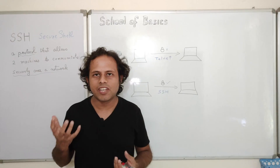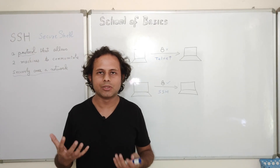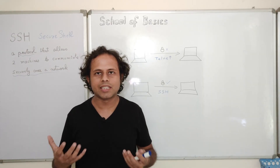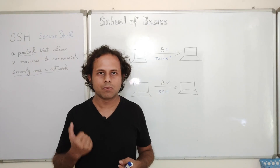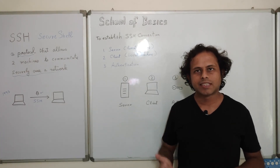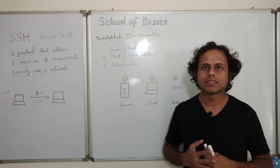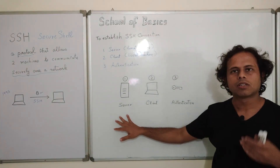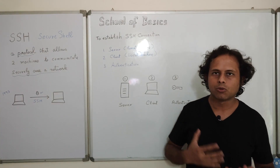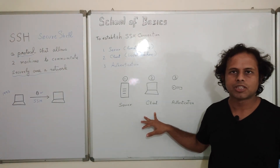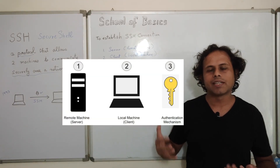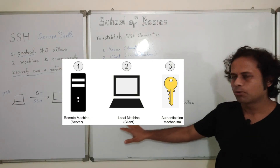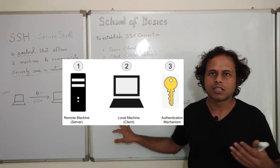With this basic knowledge of what SSH is, why it is used, and how data is secured, let us now learn how SSH works. To establish an SSH connection we need three things: first, the server or remote machine we want to access; second, the client or local machine; and third, an authentication mechanism so the server can authenticate the client and vice versa.